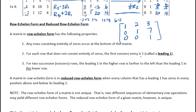As long as you have ones along the diagonals and zeros below it, that is what's called row echelon form. A matrix in row echelon form is called reduced row echelon form when every column that has a leading one has zeros in every other position.